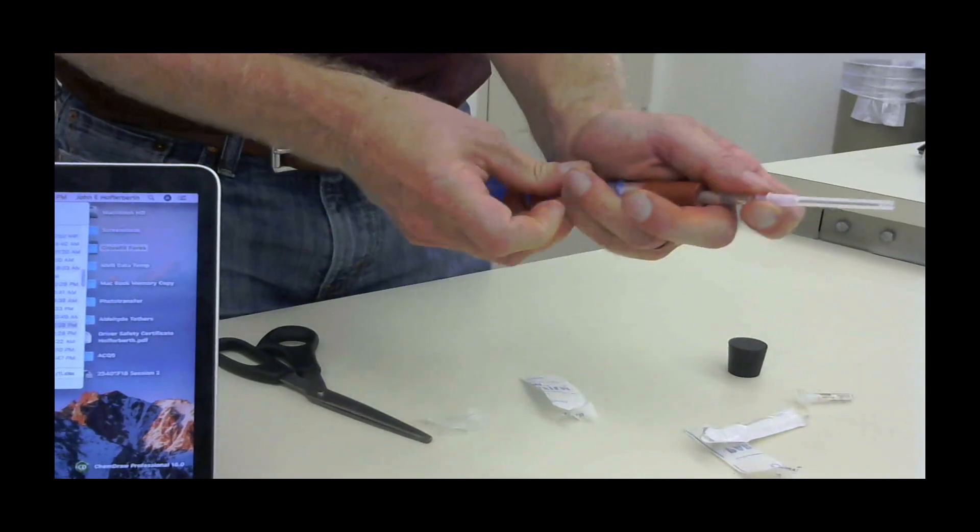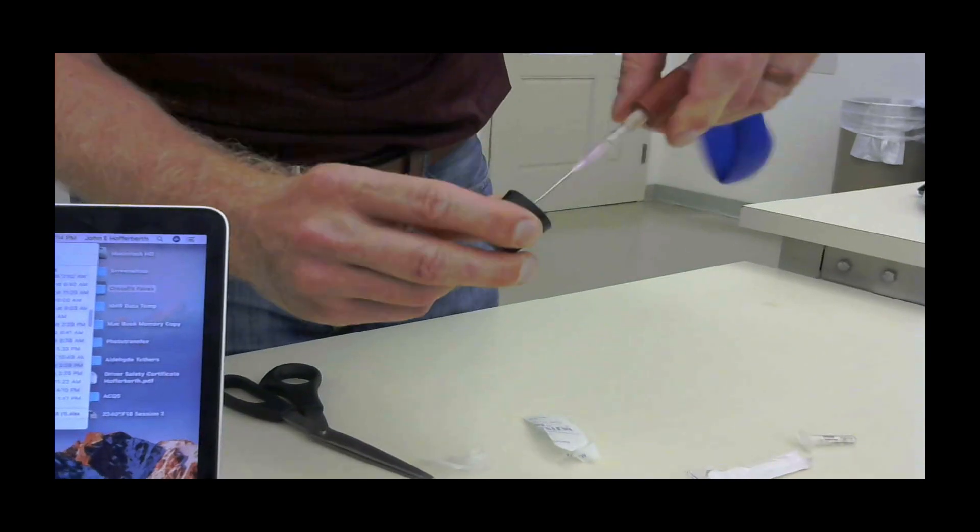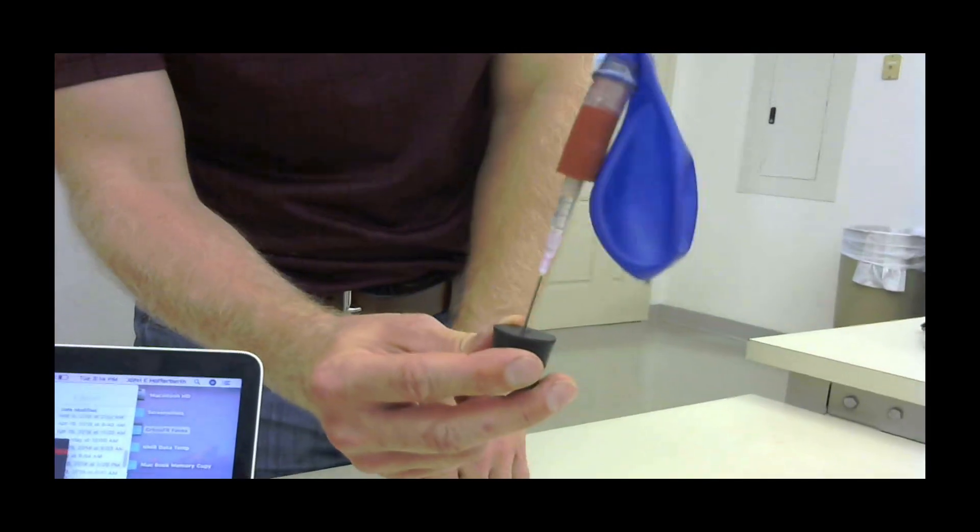Okay, so once the needle is on, you can pull this out and if you want to seal it temporarily before it goes into your septum, you can put it in a rubber stopper. So now we would have a balloon with this sealed on top.